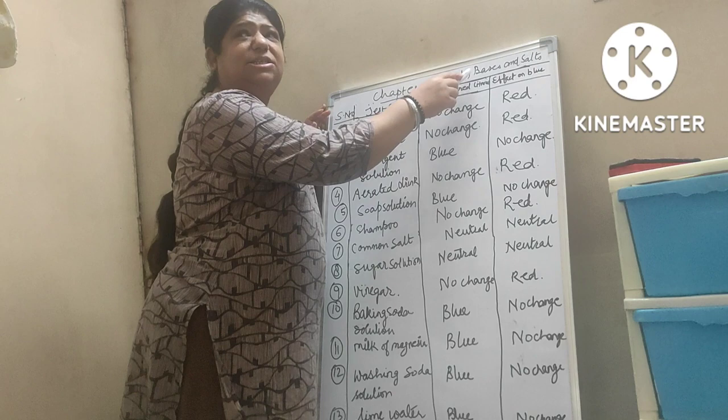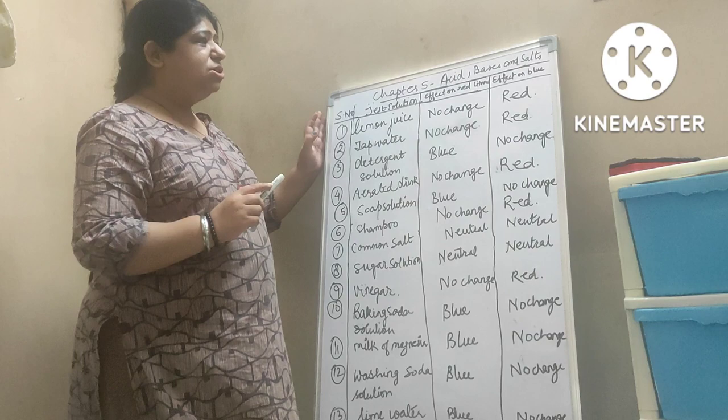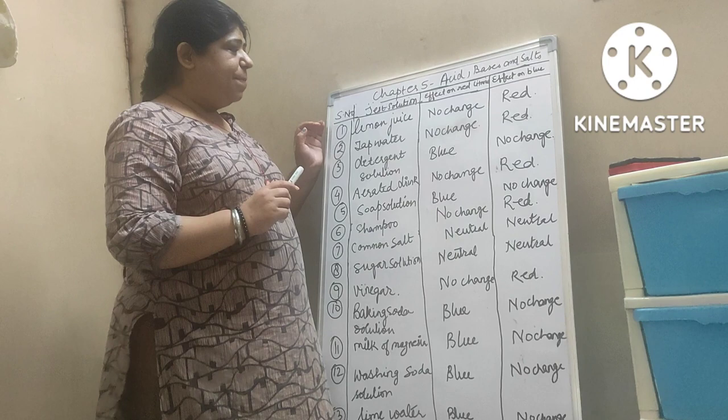We have already discussed what are acids and what are bases. Chapter 5 of Class 7 — acids, bases and salt. We have also already discussed what are indicators.